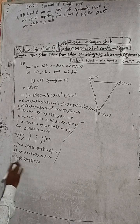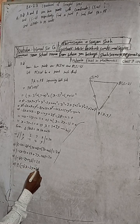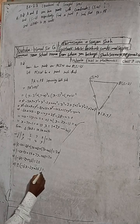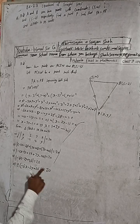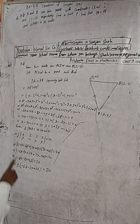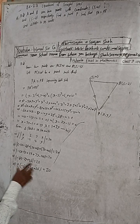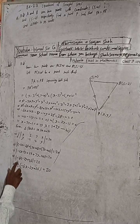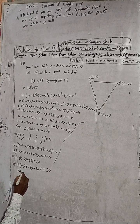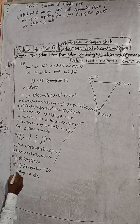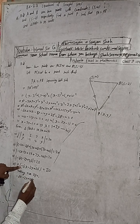The model gives us: minus 6x minus 2y plus 26 is equal to 0. And 6x minus 2y plus 26 is equal to 20.